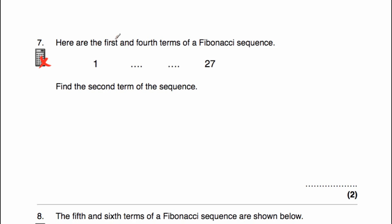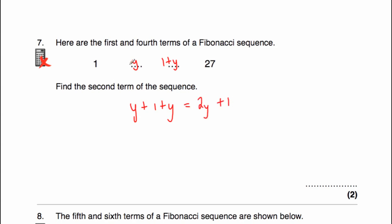Question number 7 says the first and fourth terms of a Fibonacci sequence are shown, and we've got to find the second term. To get this 27, we would have added these two numbers together, so this number plus this number is equal to 27. But we know we start off with 1, so 1 plus this number is equal to that number. Let's call this number y. So 1 plus y is equal to the third term, meaning the third term must be 1 plus y. Now to get 27, we're going to add our y and our 1 plus y. So y plus 1 plus y — y plus y is equal to 2y, and then we've got our plus 1. So this term plus this term would have to be equal to 2y plus 1. But we know that's equal to 27.